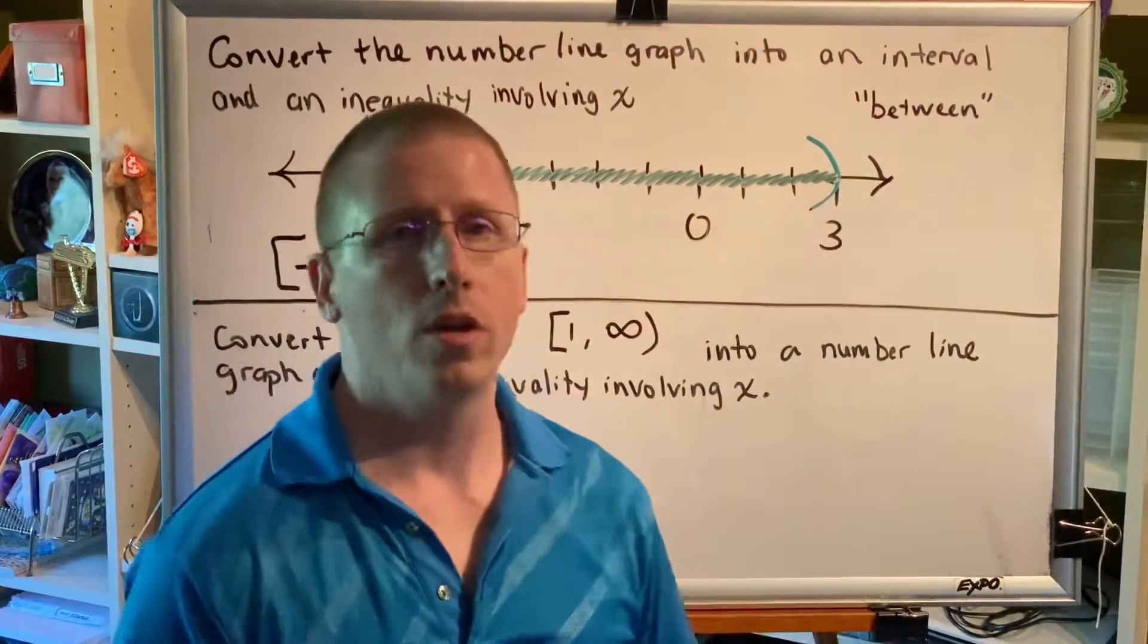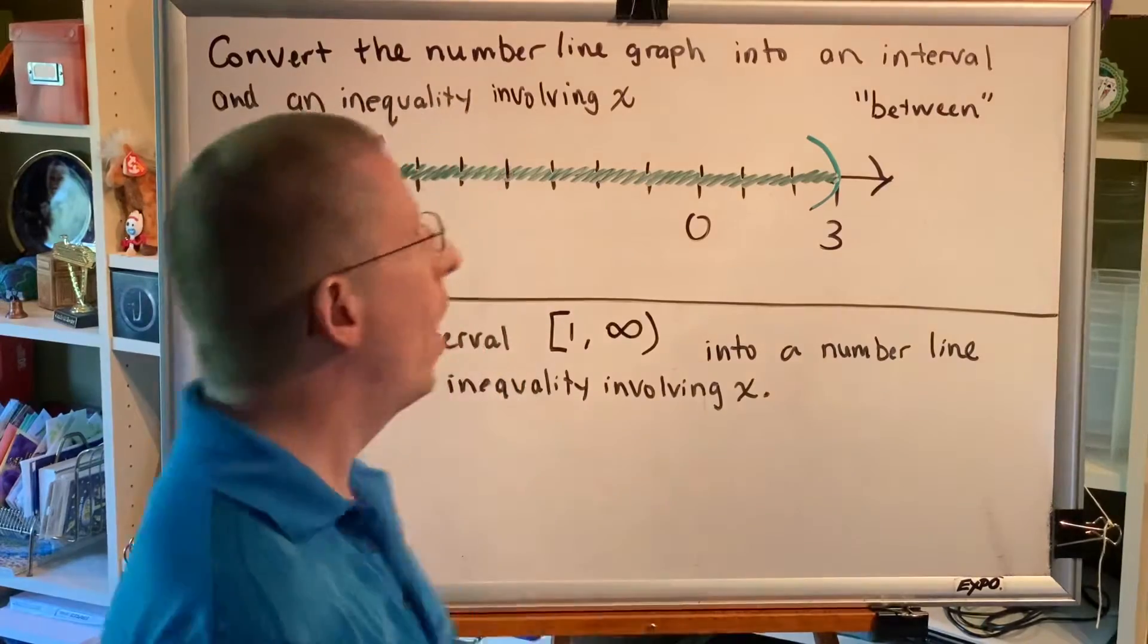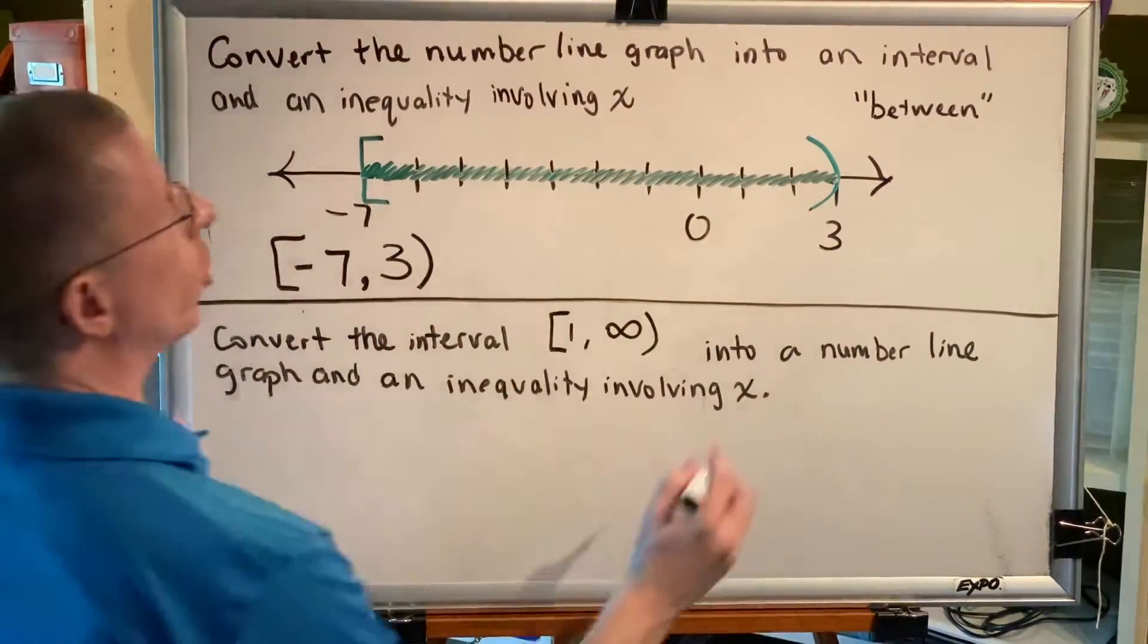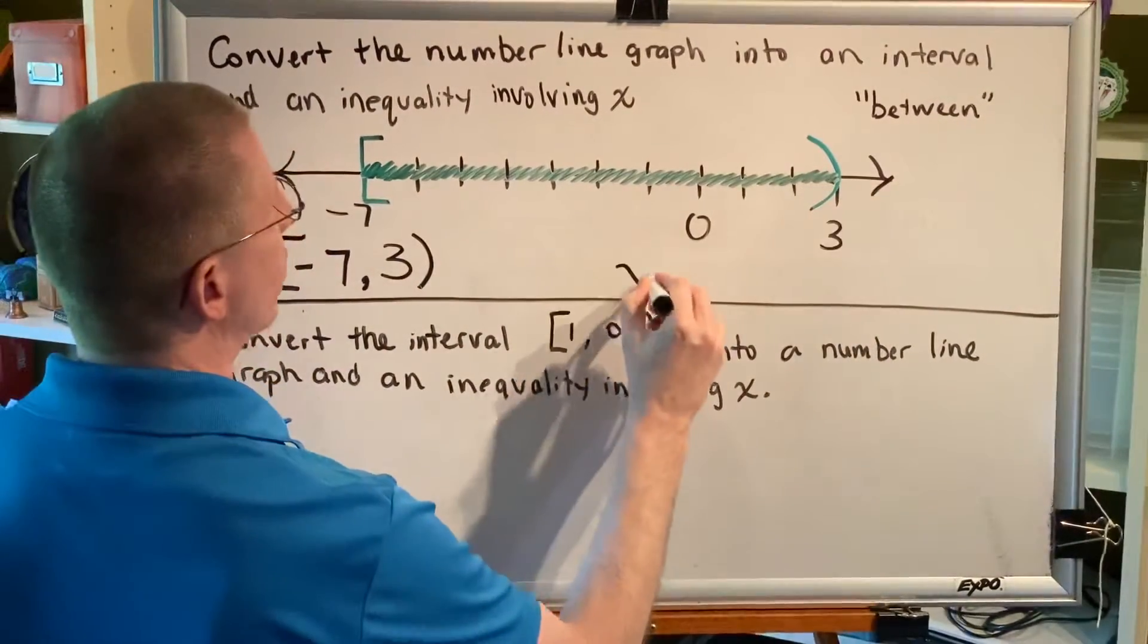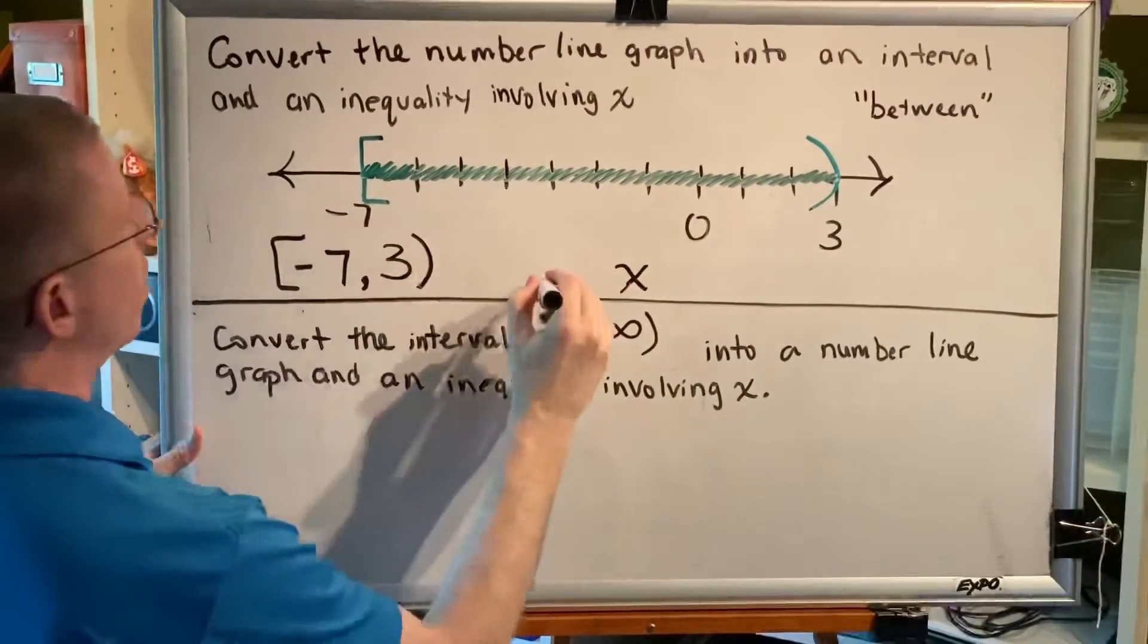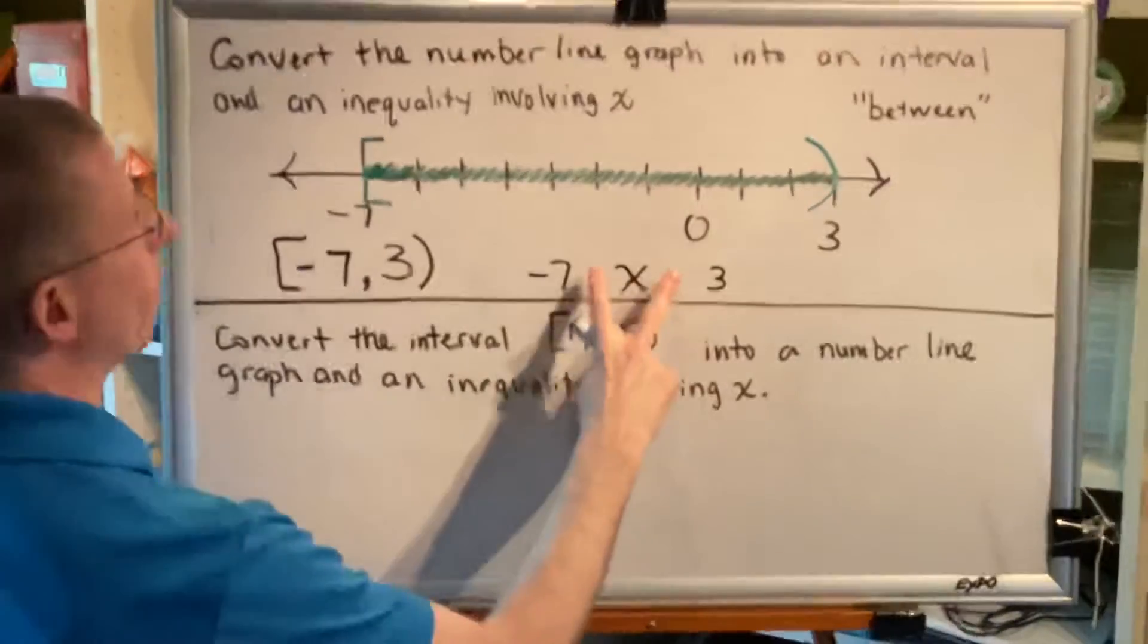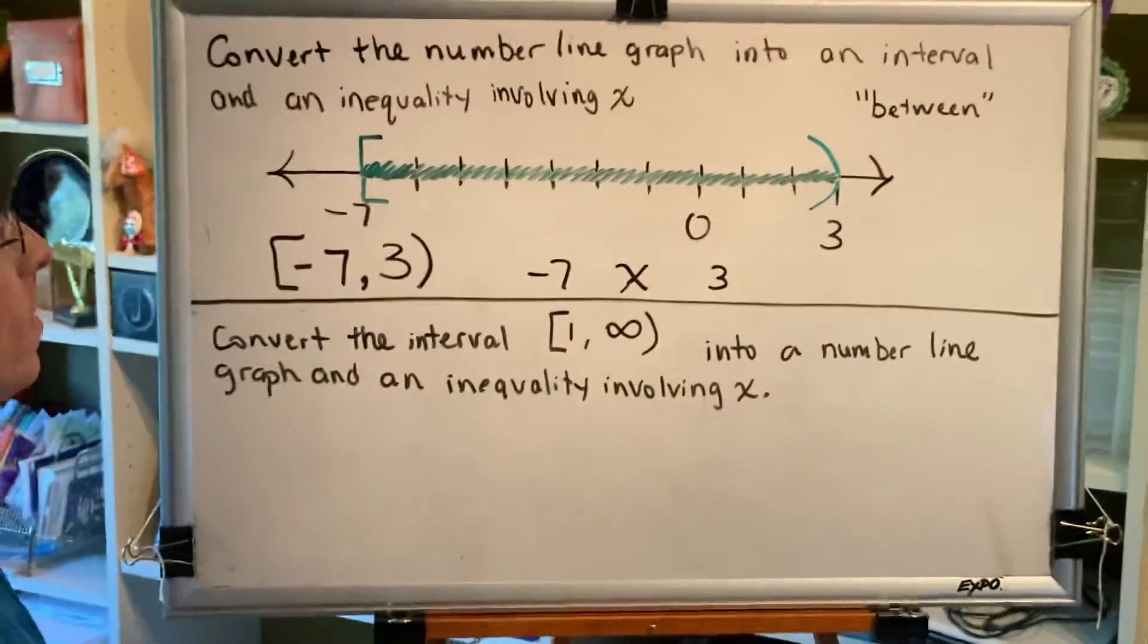Let's again focus on this word between. When writing a between type as an inequality, you literally want to put the variable x between the two numbers that are shown, which would be the negative seven and the three. Then the only thing left to do is to put a comparison type symbol in between them.